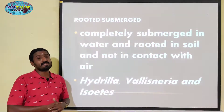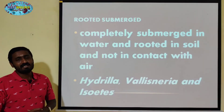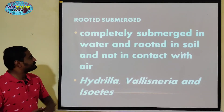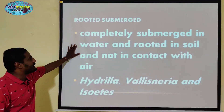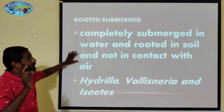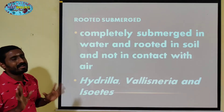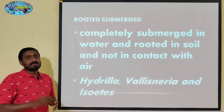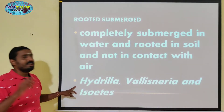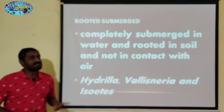Next one is Rooted Submerged — the 4th type. It has been attached with the mud, under the water level, completely submerged. It is rooted in the soil and not in contact with the air. It is utilizing the oxygen present in the water. Examples are Hydrilla, Vallisneria, and Isoetes.